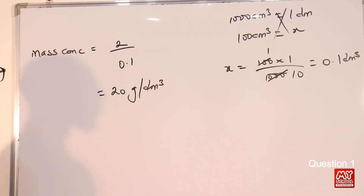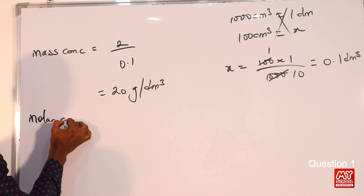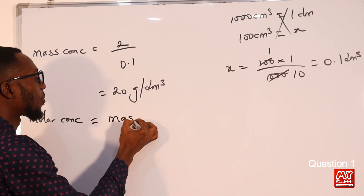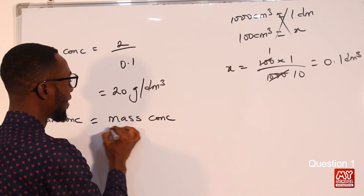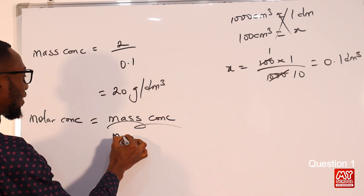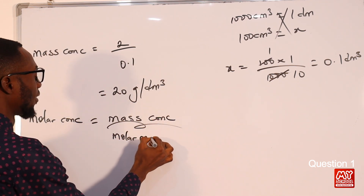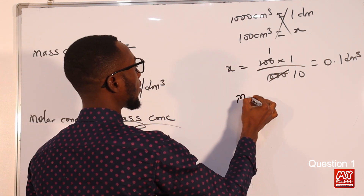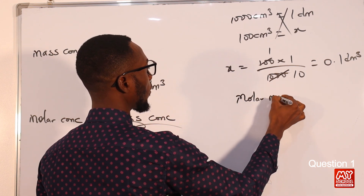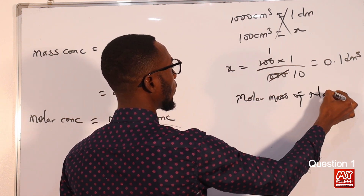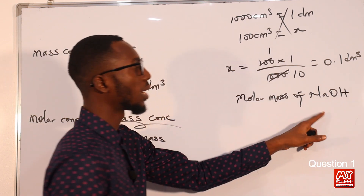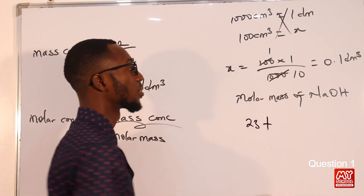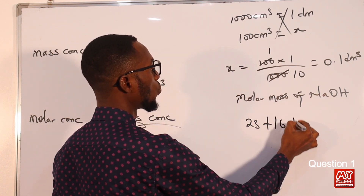Recall that molar concentration equals mass concentration over molar mass. The molar mass of sodium hydroxide: we have 1 atom each — 1 atom of sodium which is 23, plus oxygen which is 16, and hydrogen which is 1. So 23 + 16 = 39, plus 1, that is 40 g/mol.